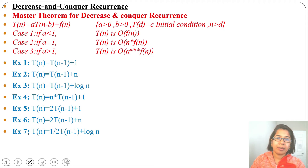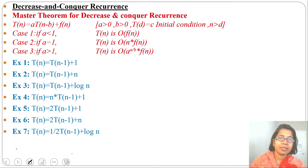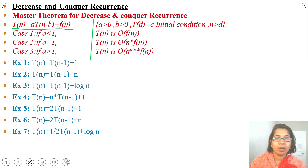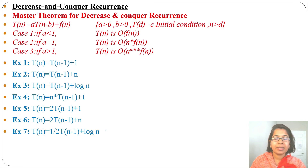I already discussed how to apply back substitution and the recursion tree method in chapter 1. If any recurrence is given, first identify whether it is a decrease and conquer recurrence. If it is in the form T(n) = a·T(n-b) + f(n), then it is a decrease by constant recurrence, and we can apply this master theorem, or back substitution, or the recursion tree method. With this, I am finishing the decrease and conquer technique. In the next lecture, I will discuss divide and conquer. If this lecture is helpful, please like and subscribe. Thank you.